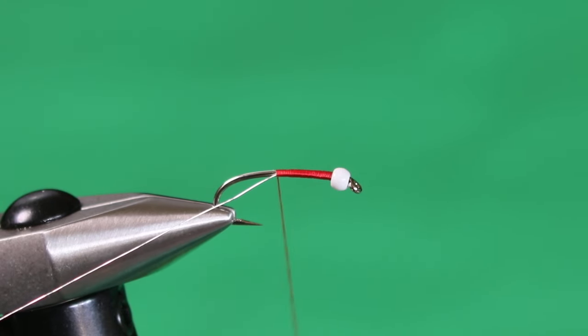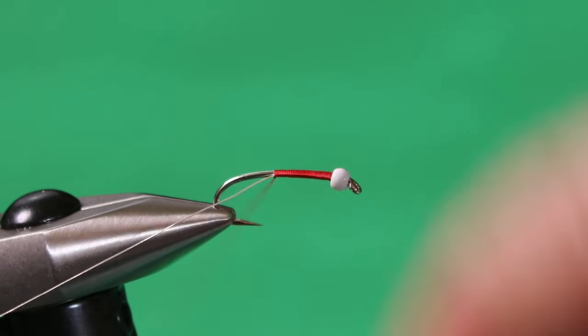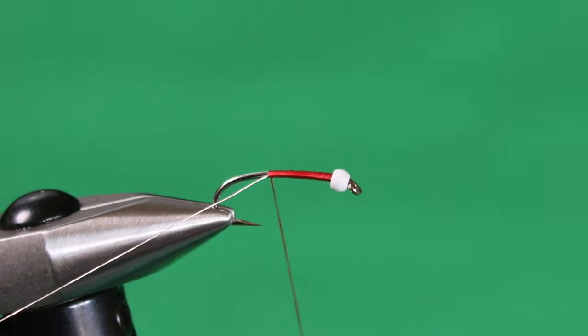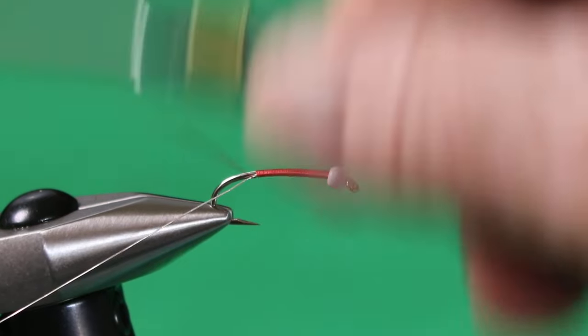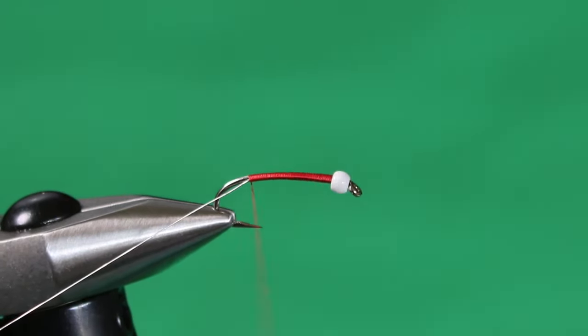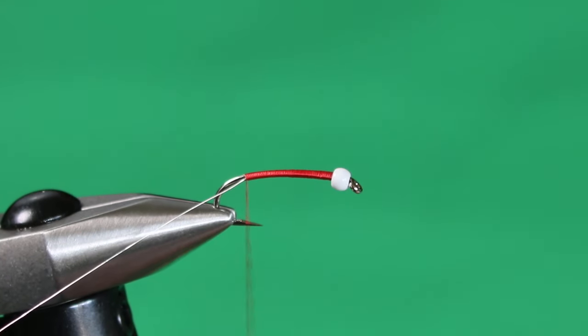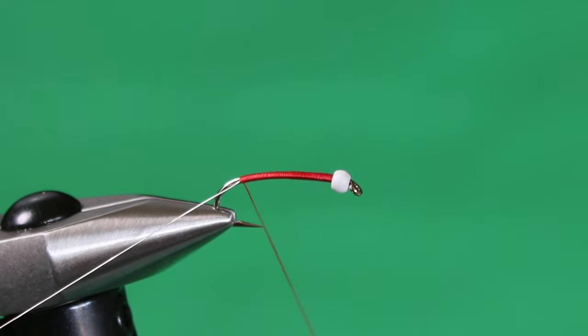Give it a nice spin every once in a while. So we're going to secure this all the way down, and you want to go slightly into the bend. The way I like to do this is I wrap the thread down to approximately to the back of the crushed down barb.